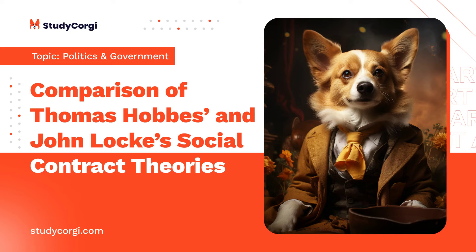Since the beginning of civilization, people have been asking questions about the nature of authority. The suggestion of seeing a political society as an advantageous arrangement could be found in ancient Greek philosophers' works. Related conceptions were used to justify feudal leaders' power. Thomas Hobbes and John Locke developed their systematic theories of a social contract based on the idea of a mutually beneficial political agreement. However, sharing a similar concept of a deliberate and mutual agreement, Hobbes and Locke articulate different views on a range of essential details.